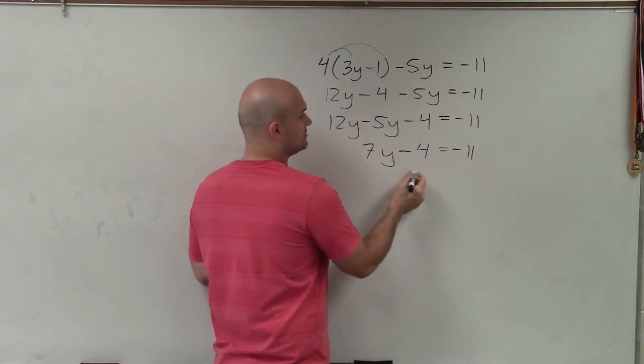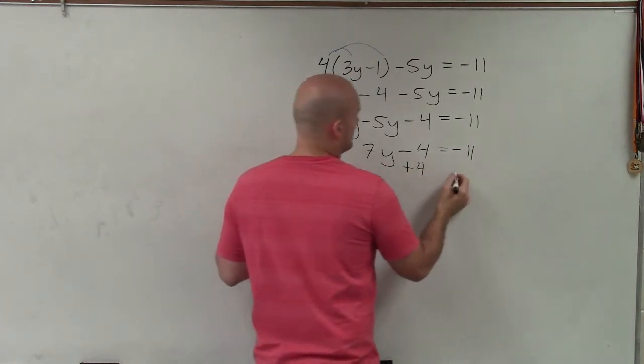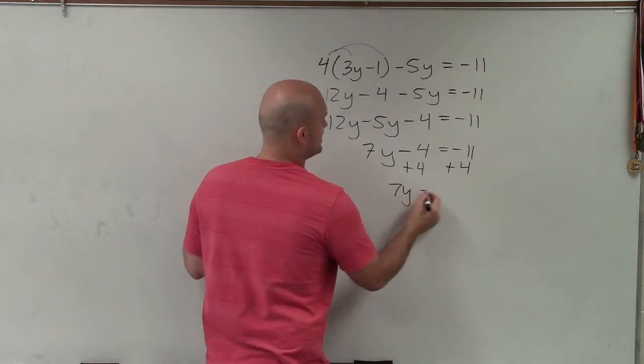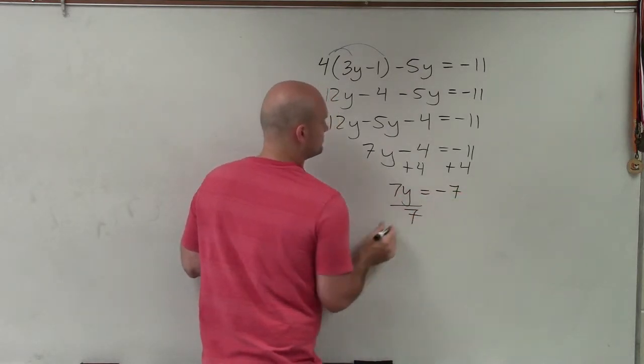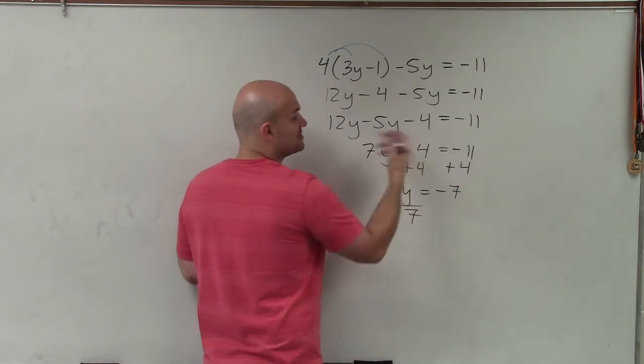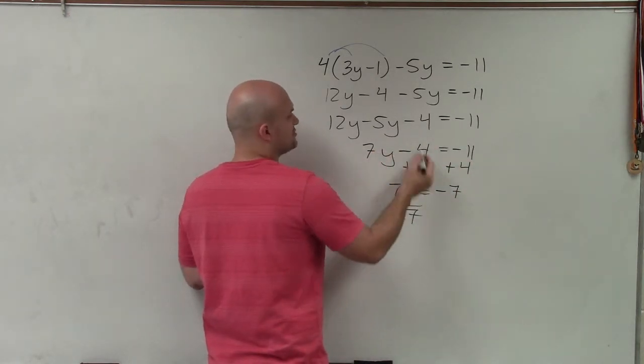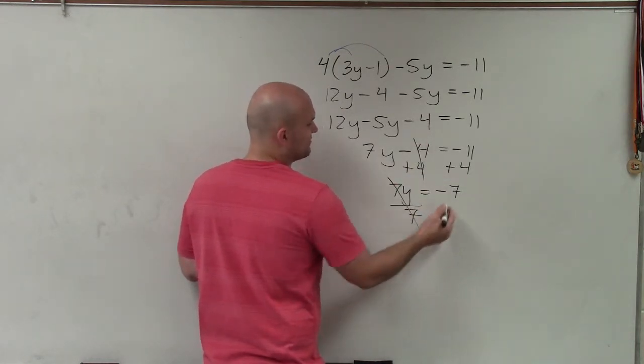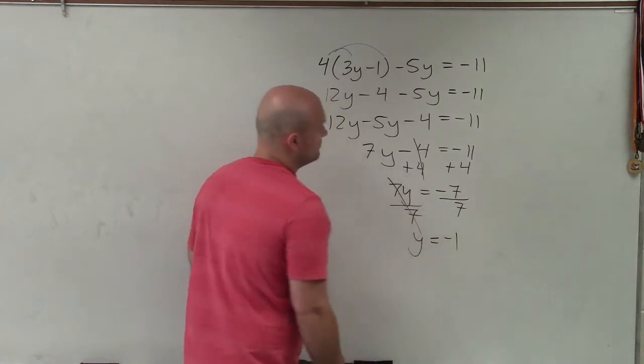Now to go ahead and solve for y, I'm going to add 4 to both sides and I get 7y equals negative 7. Now I divide. So here's my two-step equation. Now I use my reverse order of operations, which is to undo addition and subtraction by adding 4 on both sides. Now I'm going to undo multiplication by dividing by 7 on both sides and I get y equals negative 1.